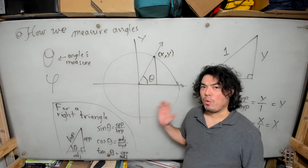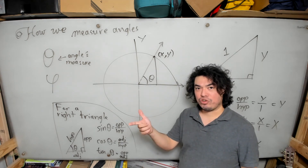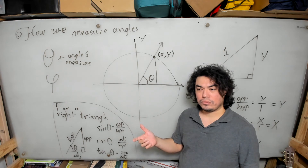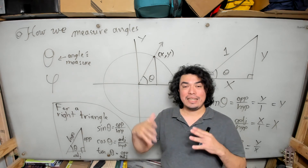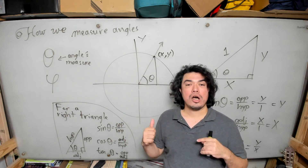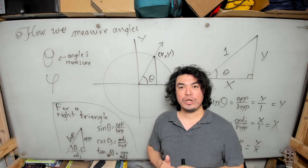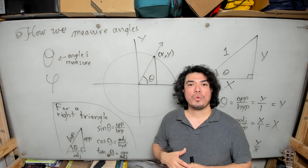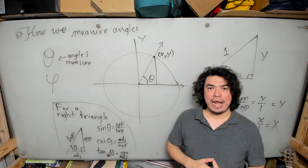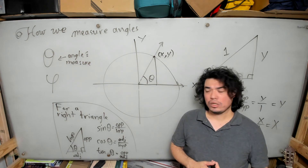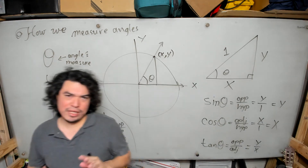One of the limitations of right triangle trigonometry is that the angles of a triangle must add up to 180 degrees, so we could only ever take the sine, cosine, and tangent of angles less than 90 degrees. We couldn't go beyond 90. Now, with the unit circle approach, that will be a possibility.